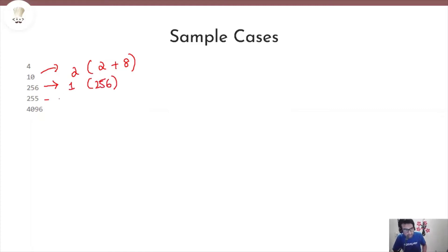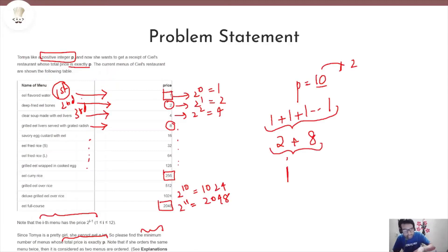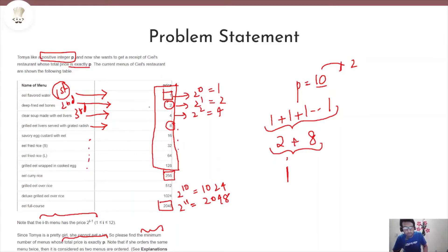The third case is very important and interesting — I suggest you pause this video for a couple of seconds. What will be the minimum number of menus ordered to achieve P=255? The answer is 8. In order to meet 255, we need to order 8 menus: one menu item each of price 1, 2, 4, 8, 16, 32, 64, and 128. This whole sum is 255, and this is the minimum number of items you have to order given this menu card.